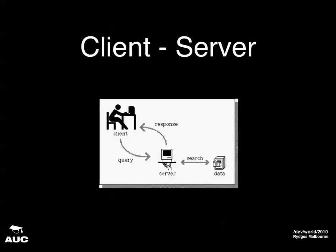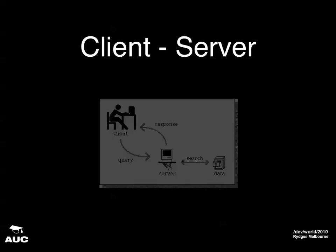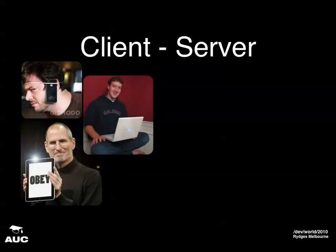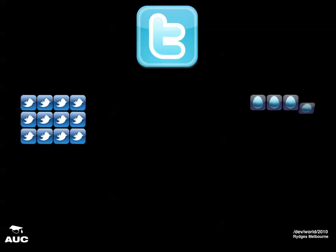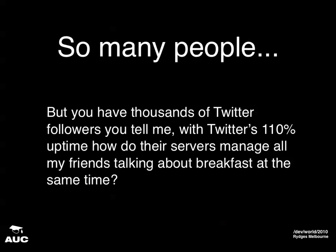Traditional client-server models look like this: you've got a guy sitting at a computer talking to a server which goes away, finds the data you asked for, brings it back, and sends it back to you. But newer client-server models include people on millions of different devices at the same time, connecting to all sorts of services concurrently. So how do we get around the fact that millions of people might all be connecting to the same server at the same time? Consider that Twitter has 110% uptime — there must be some method they use to help scalability.